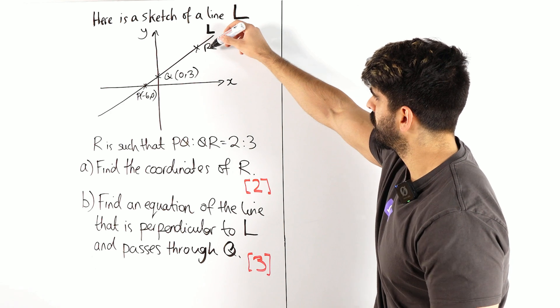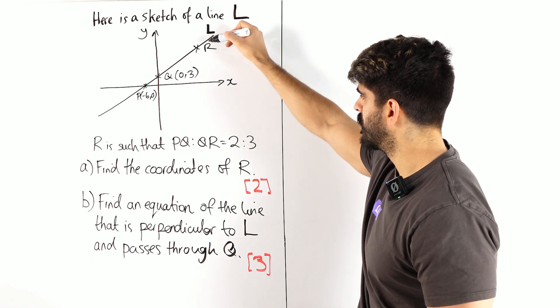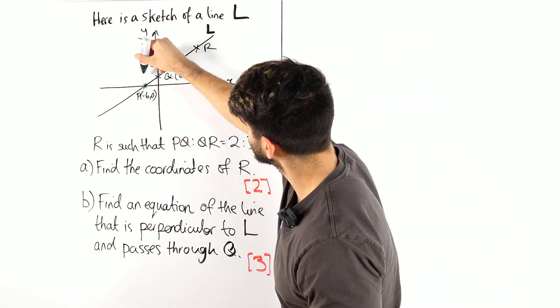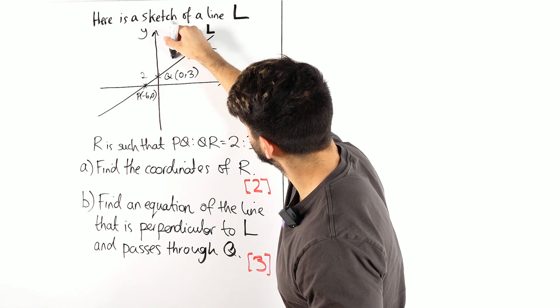Okay, so this point R here is such that the ratio of PQ and then QR is 2 to 3.